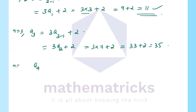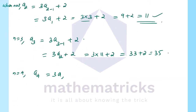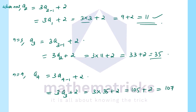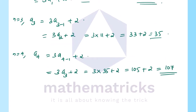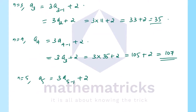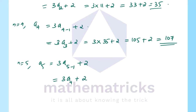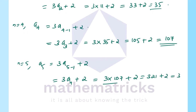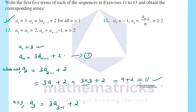Continuing question 11: a₄ = 3a₃ + 2 = 3 × 35 + 2 = 105 + 2 = 107. Now a₅ = 3a₄ + 2 = 3 × 107 + 2 = 321 + 2 = 323. So we have the first five terms.